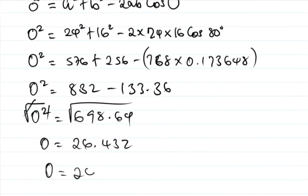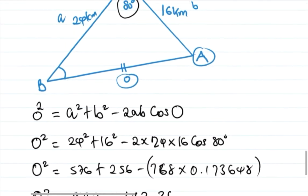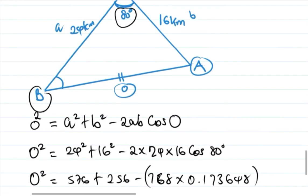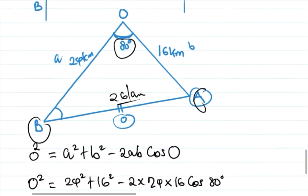So to find the value of O we're gonna square root both sides, and then we are going to have O is the square root of that answer, about 26.452. To the nearest kilometer, that's 26 kilometers. That's the distance between the two planes A and B. That's how you're gonna solve this problem.